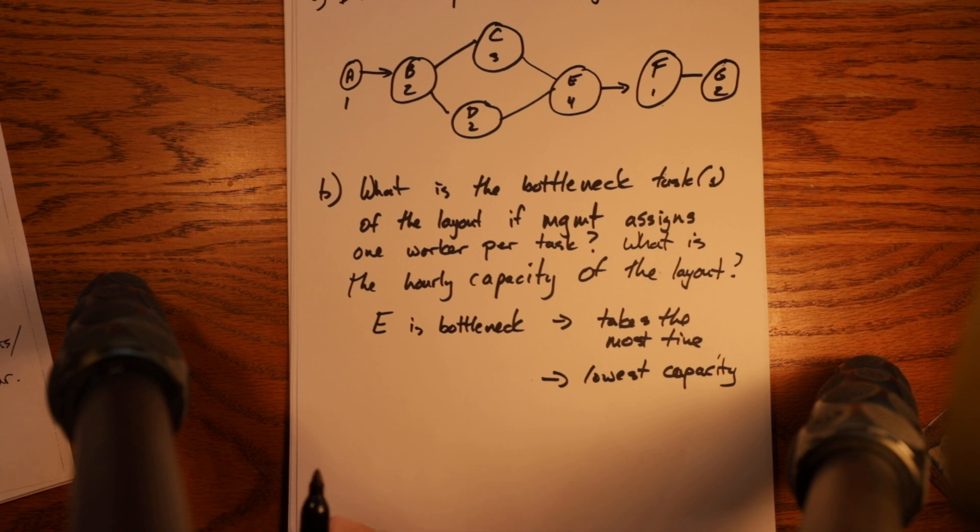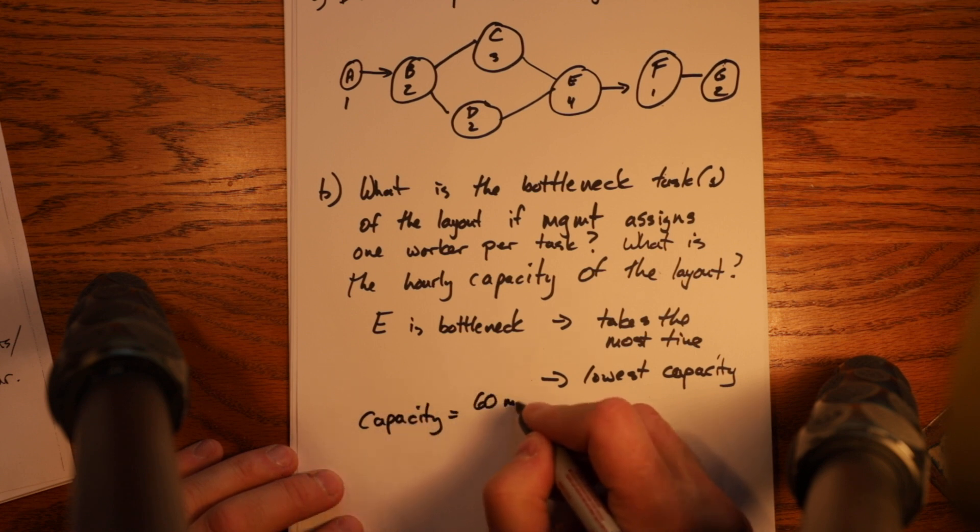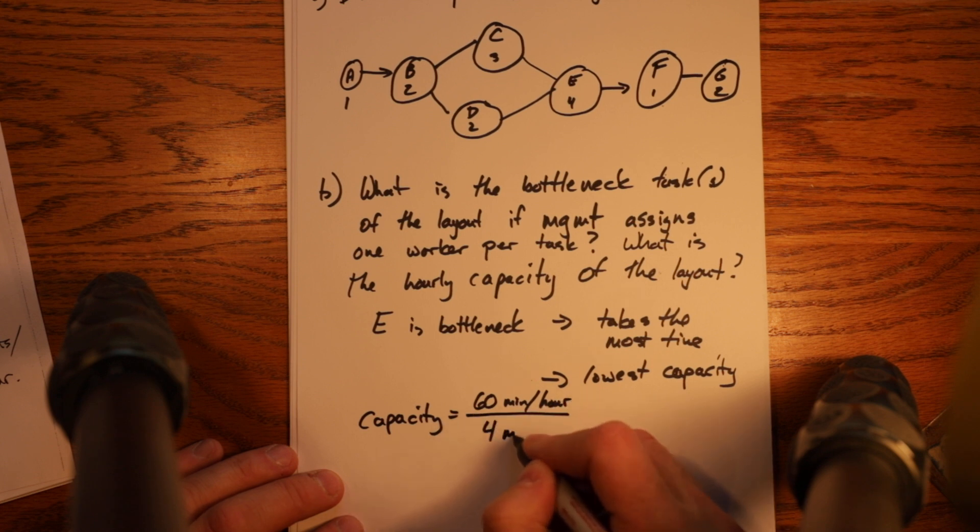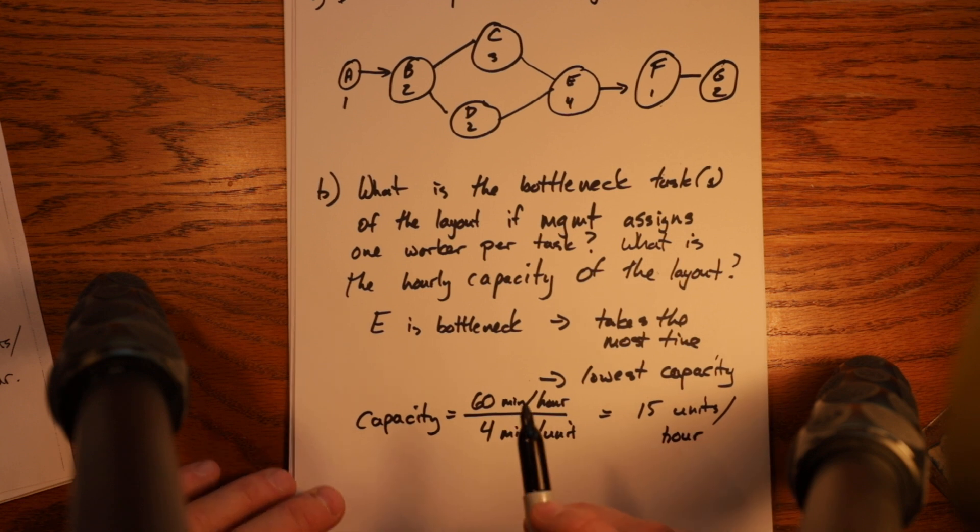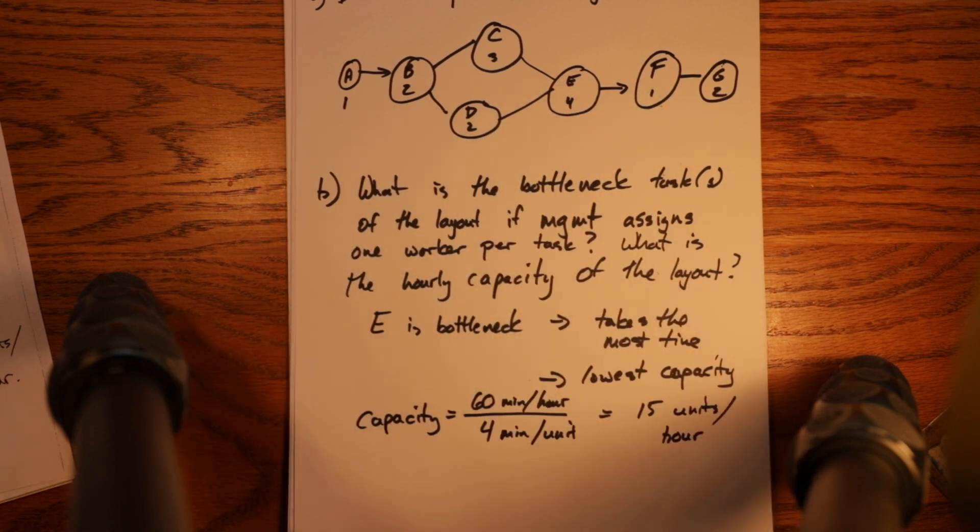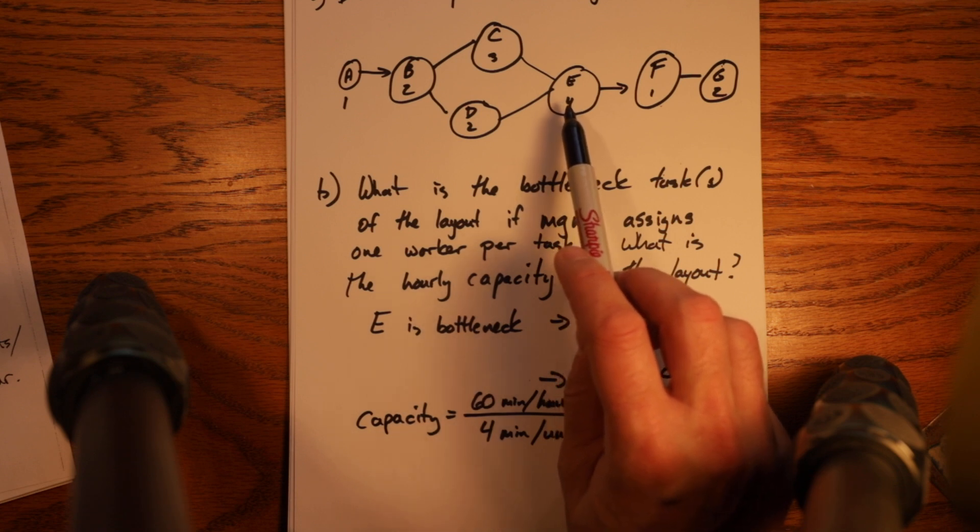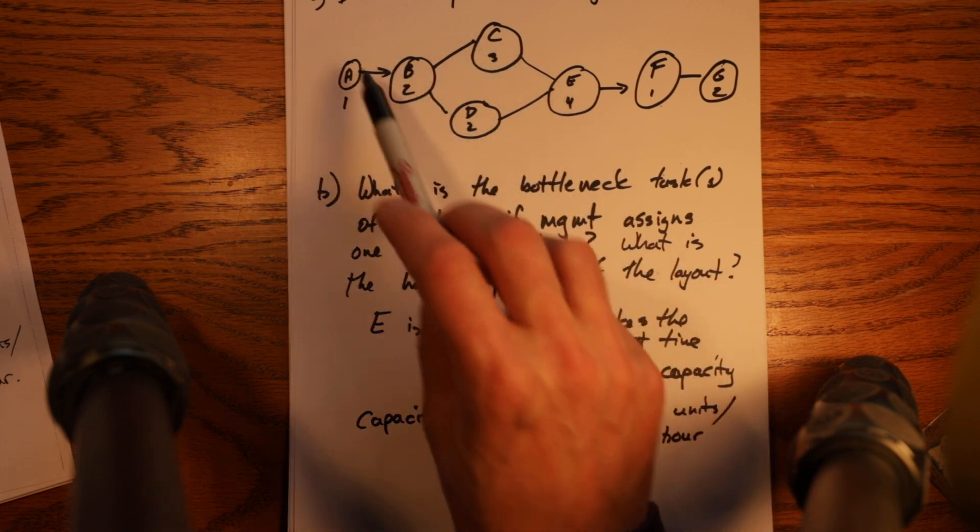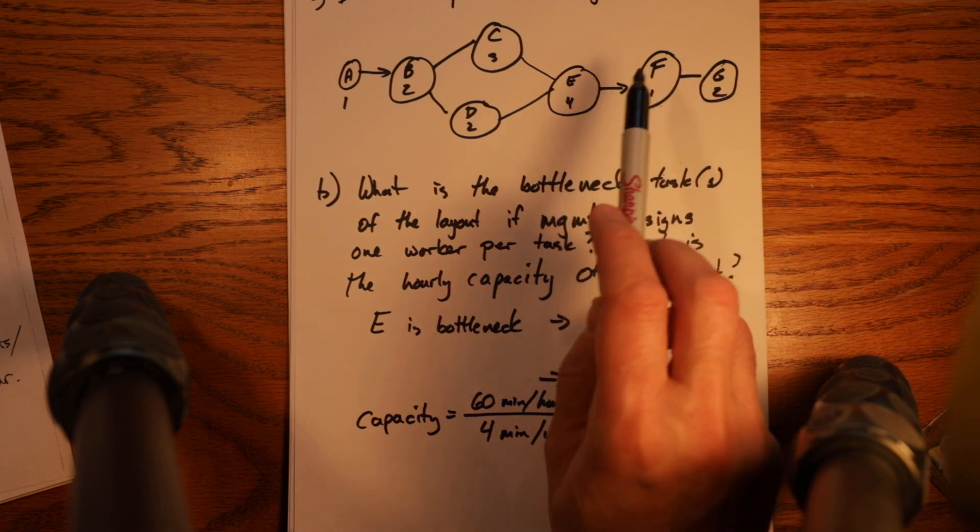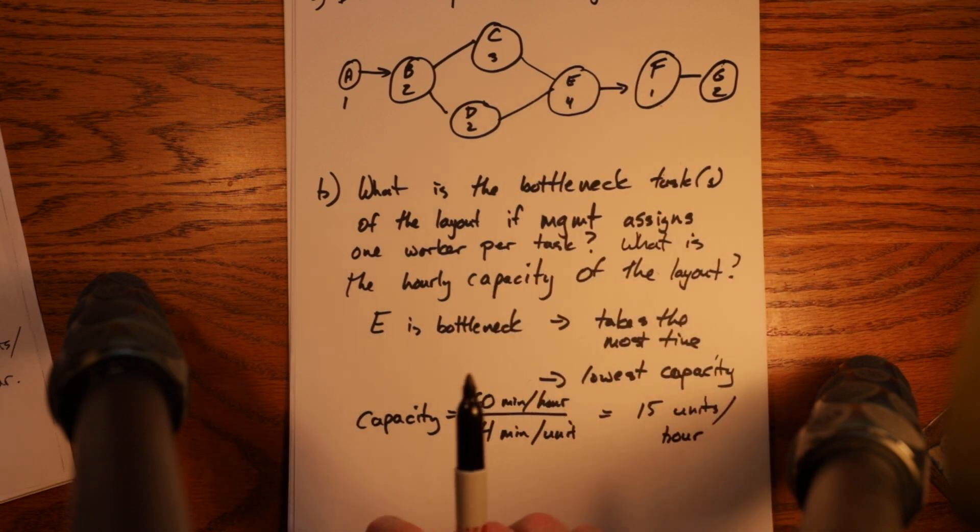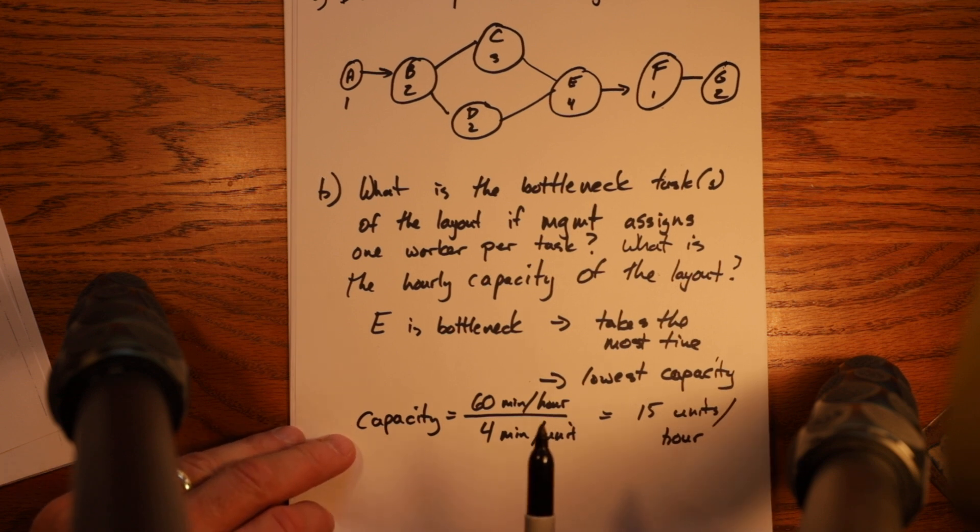What is the hourly capacity of the layout? So capacity is the inverse essentially of the time it takes. Capacity is equal to 60 minutes per hour divided by 4 minutes per unit is equal to 15 units per hour. So right now, if we had individuals on each of those, we would have a capacity of 15 units per hour because this person could only make 15 units. And these other people can make more, but because this person has to finish, these people can't finish the item. And so the entire capacity of the system is 15 units per hour.